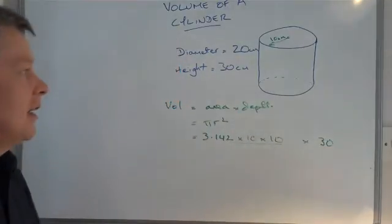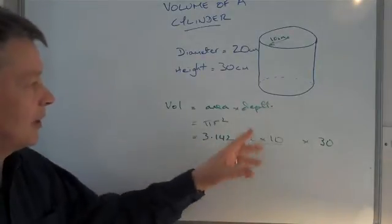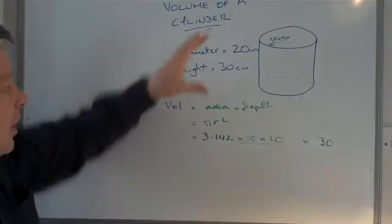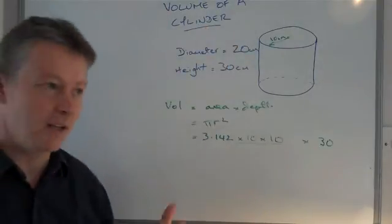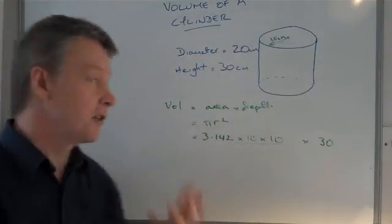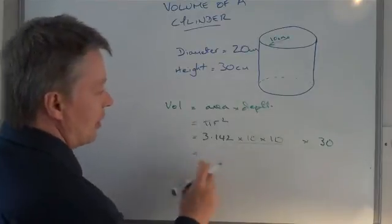Now a couple of things just to be aware of is you need to make sure that you're always multiplying by the same units each time. So it might be the height is given to you as meters and the diameter is given to you as millimeters, so you just need to convert to the correct units and multiply them all together.